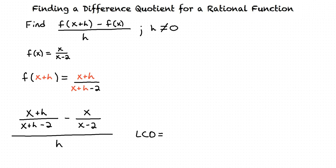We need to multiply both fractions in the numerator by the least common denominator. With this type of problem, the only way to find the least common denominator is by multiplying both denominators together. So the least common denominator is x plus h minus 2 times x minus 2, and we need to multiply both the numerator and denominator of the whole fraction by this least common denominator.